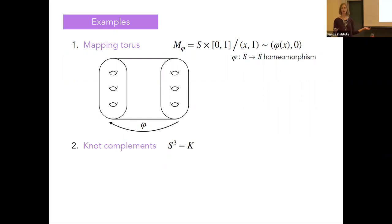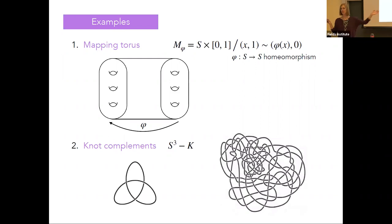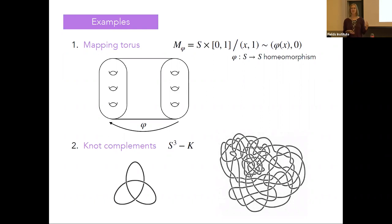The second class of examples is knot complements. You take a knot in S³, remove it from S³, and you're left with a three-manifold that — depending on whether you're removing the knot or a neighborhood of the knot — is either an open three-manifold or compact with torus boundary. Here's the simplest interesting knot, the trefoil knot, and here's a much more complicated knot that is actually, secretly, the unknot. These are really interesting manifolds, but even though they seem very natural, they're not necessarily the easiest to work with and actually tell what manifold you're working with.